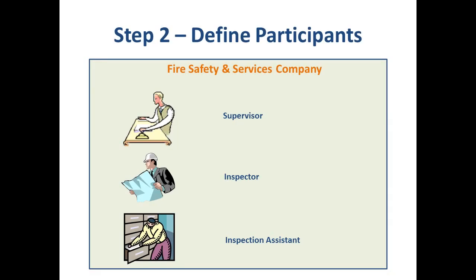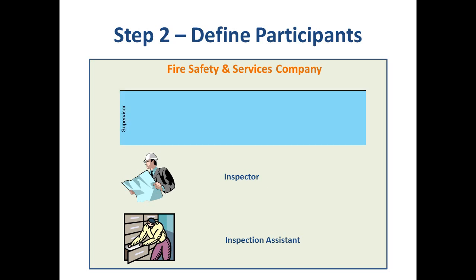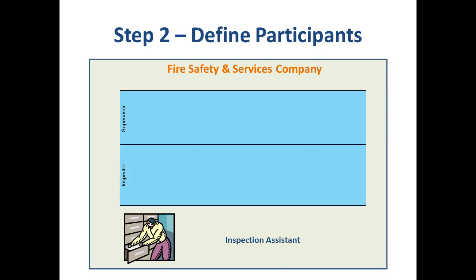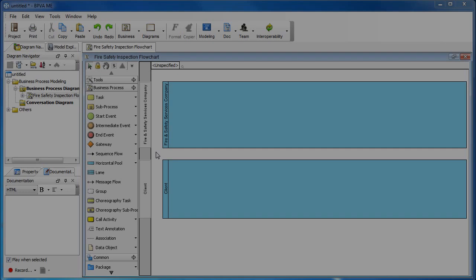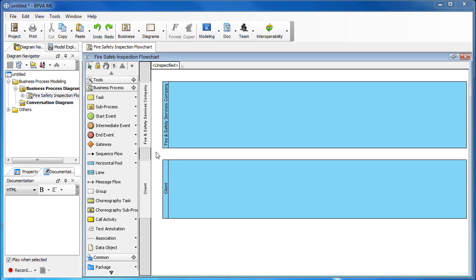For our flowchart, there are three participants in the company: the Supervisor, Inspector, and Inspection Assistant. In BPMN, we use a lane in a pool to represent a participant in a company. So in the Business Process Diagram, Supervisor will become a long bar, and similarly with Inspector and Inspection Assistant. To represent that these participants are from the company, these three lanes are within the company pool.